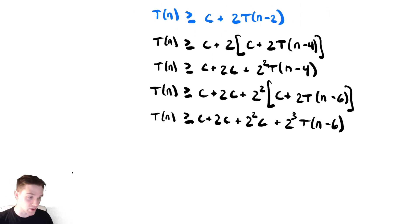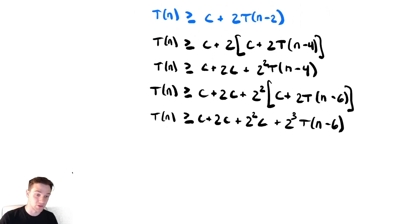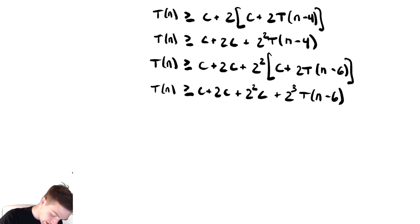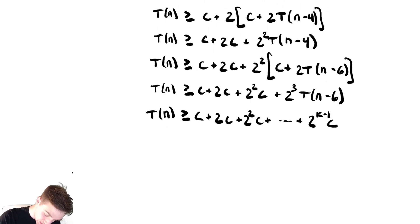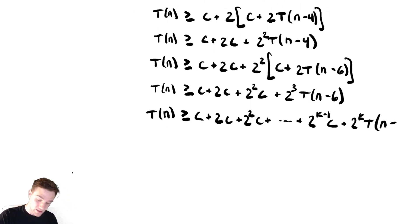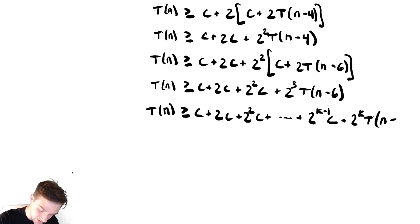Looking at those first few terms, they are adding up powers of 2, and they're always one less than the power of 2 appearing on the T. Interpolating that pattern, we have C plus 2C plus 2 squared C plus all the way up to 2 to the k minus 1 times C, plus 2 to the k times T of n minus 2k.